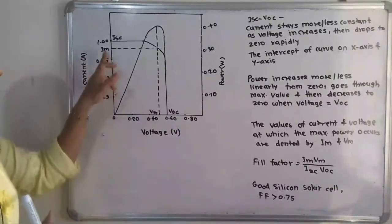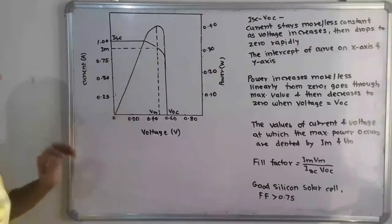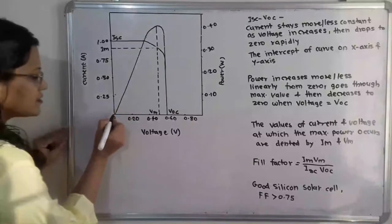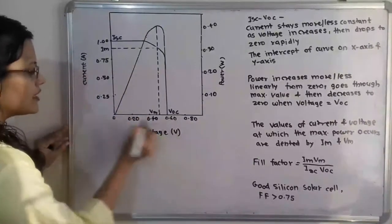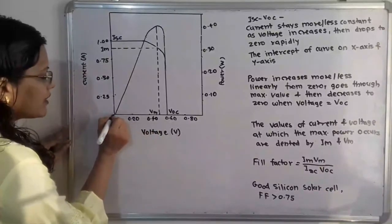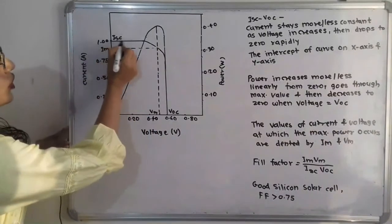Then if we observe here, the current stays more or less constant as voltage increases. That means here is the 0, 0.20, 0.40, that is the voltage V. So here as this voltage increases, this current stays more or less constant and then it drops to zero rapidly.